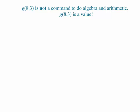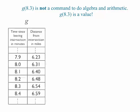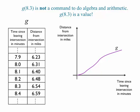You may have come to see g(8.3) as a command to plug in 8.3 and crank out an answer — but it's not a command to do something. g(8.3) is a value. I'll prove it: we could represent that function as a table. What is g(8.3)? It's 6.54 miles — how far the motorcycle has traveled. Similarly, on a graph, the point at time 8.3 has coordinates (8.3, g(8.3)), representing those two values taken together as the quantities change.